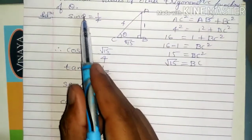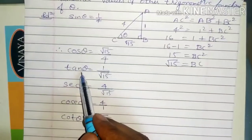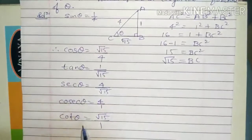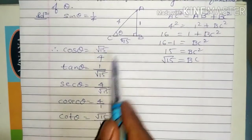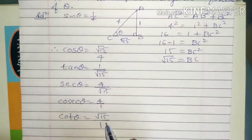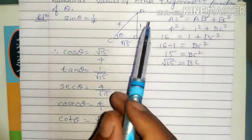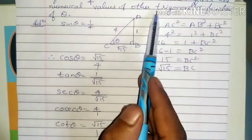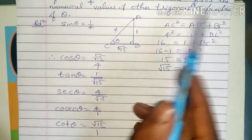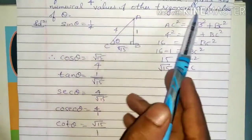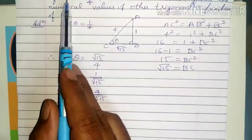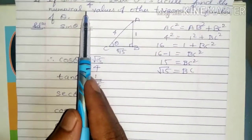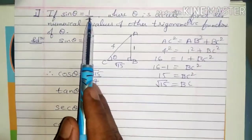You just find sin theta, cos theta, and tan theta. Using these three, you can find the other three by taking their reciprocals. This is how you find the values of other trigonometric functions whenever the value of one trigonometric function is given.